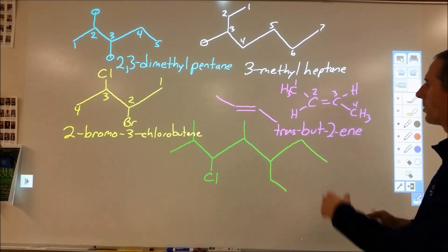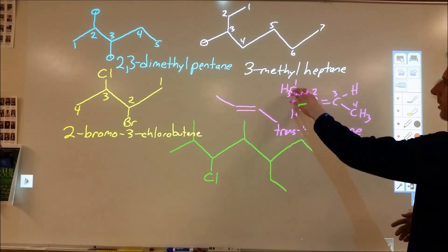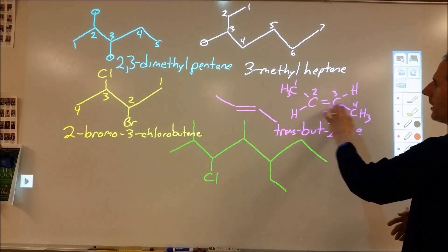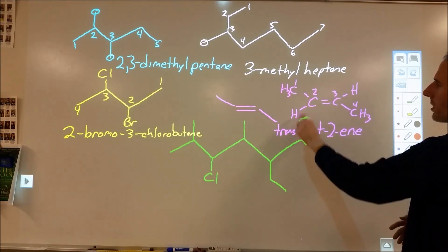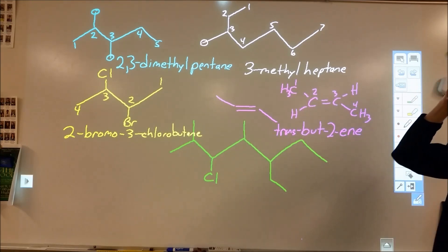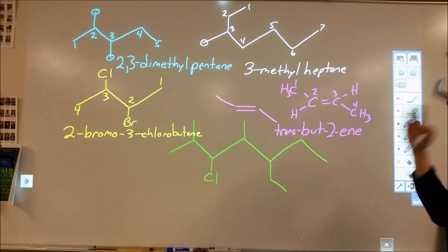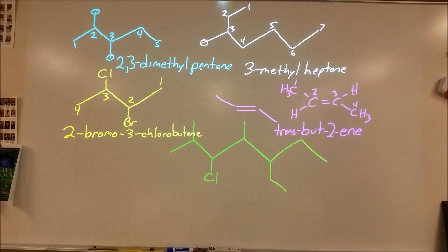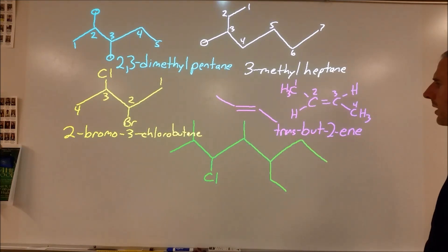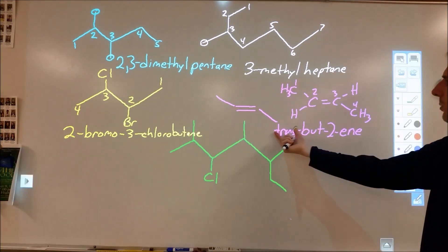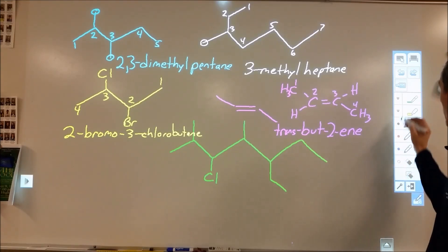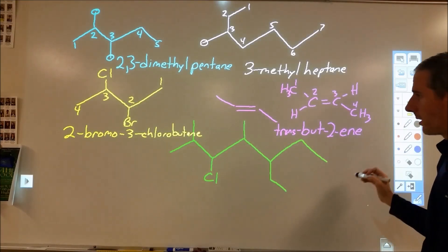E and Z notation can be used for any double-bond isomers; cis and trans are used when the two groups on each carbon are the same. In this case I can call it trans-but-2-ene, or equivalently (E)-but-2-ene. When using E, you put it in parentheses.